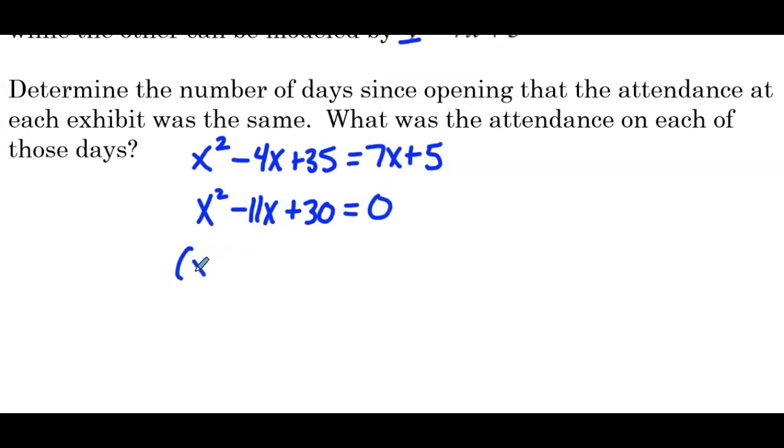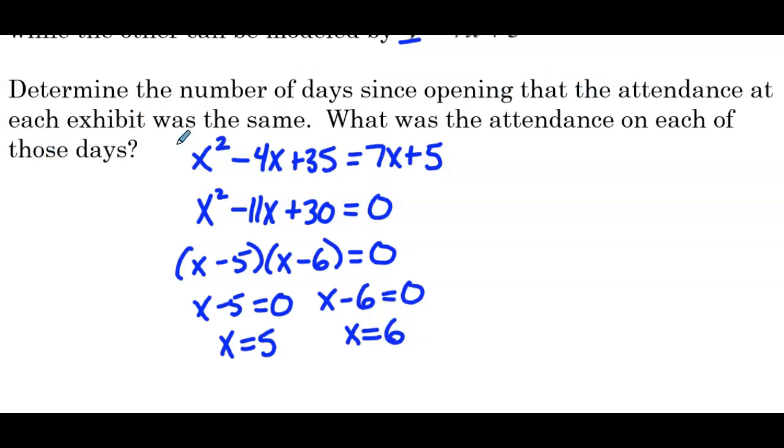We can factor this. x minus 5 times x minus 6 equals zero. Negative 5 times negative 6 is positive 30. And if we add them up, we get negative 11. So either x minus 5 equals zero or x minus 6 equals zero by the zero product property. So we have x equals 5 or x equals 6. So the number of days since opening that the attendance at each exhibit was the same, 5 days and 6 days.